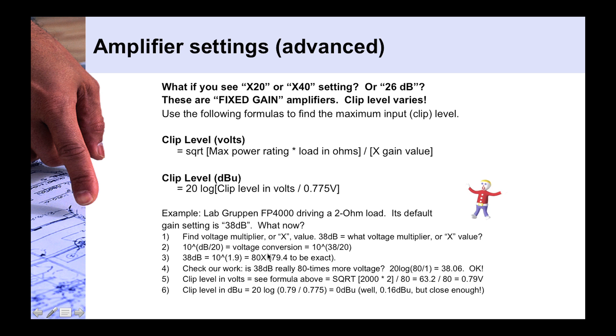So now, now that we have our x value here of 80, we go up and plug that into the formula above, of the square root of the max power rating times our load in ohms, divided by the x gain value. So, down here we have the square root of, in this case, the FP4000 is a 2,000 watt amplifier into 2 ohms. So that's going to be max power rating times load in ohms, so that's 2,000 watts times 2 ohms, divided by our x factor here of 80, which we just got from our previous calculations. So, again, doing some more math, this whole equation here boils down to 63.2 divided by 80, which gives us 0.79 volts. So, let's convert the volts to dBu, and it's just slightly above 0 dBu for this particular amplifier.